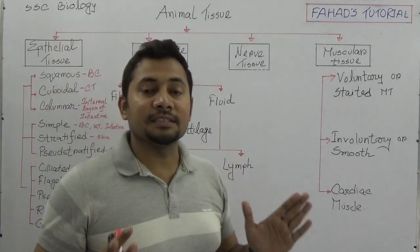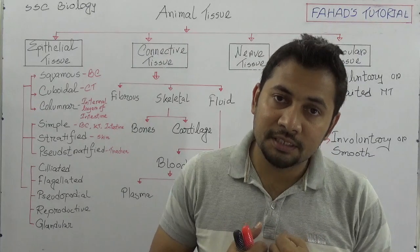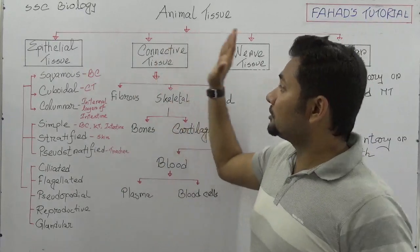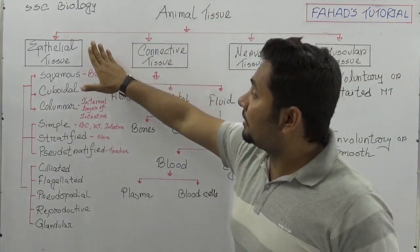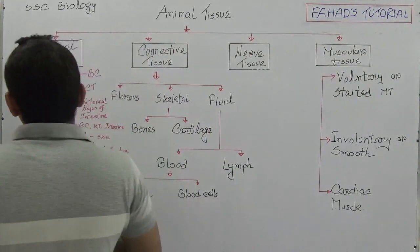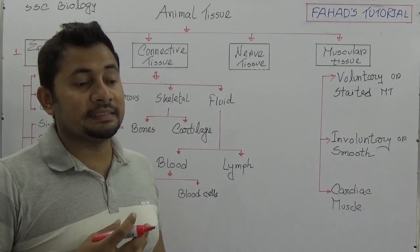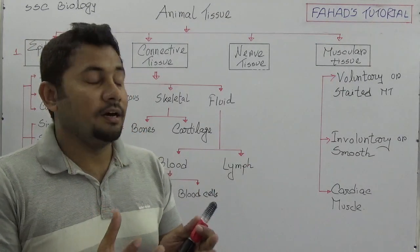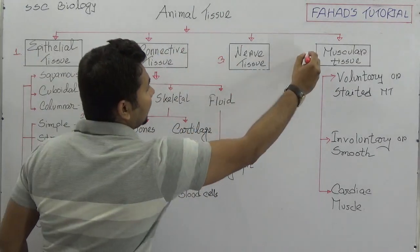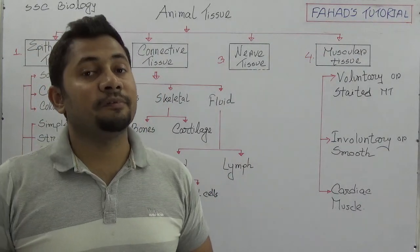On the basis of some characteristics, we know that tissues are a bunch of cells doing some specific functions. If we divide the animal tissues, we can see that there are 4 different types of tissues: number one is epithelial tissue, which acts as a covering; connective tissue; nerve tissue; and muscular tissue.